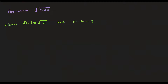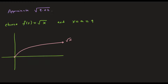Once I have my tangent line, I can plug in 9.02. Visually, square root of x looks like this, and you want to approximate the value at 9.02 — maybe right here on the curve. I don't know that without a calculator, but if I can find the tangent line at x equals 9, that tangent line is pretty close to that function value. So if I plug 9.02 into my tangent line, I can approximate that as the function value at 9.02. Let's go ahead and find this tangent line.